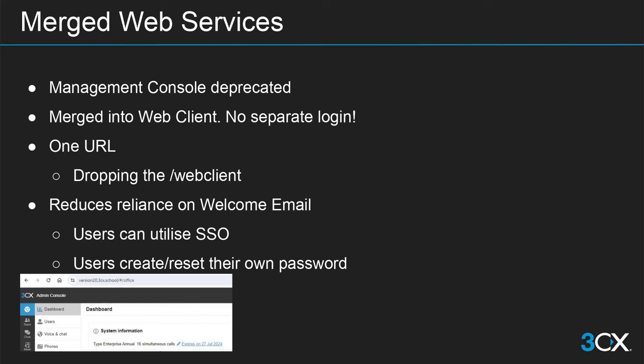Since we have deprecated the management console in version 20, we will need to use the web client's admin console to configure the PBX. This makes it a lot easier for users — they simply connect onto their web client without needing to add a slash web client at the end, making the URL easier to remember. Users with admin privileges can configure the PBX directly from within their web client, with the admin button on the bottom left, so you don't need to switch between browser tabs.